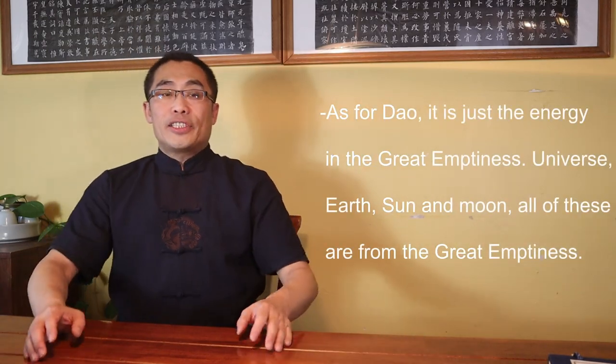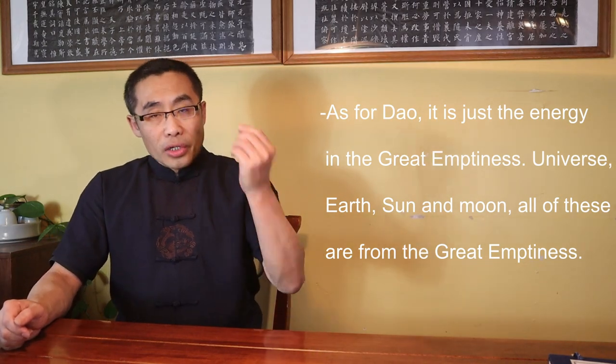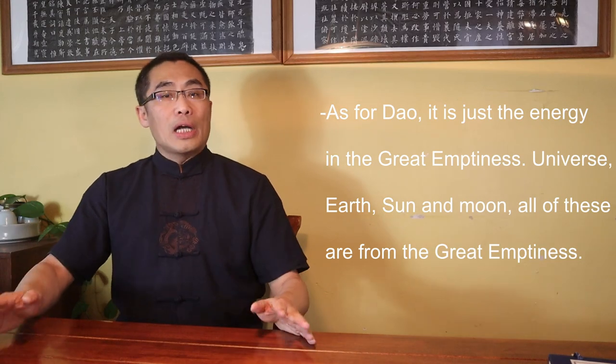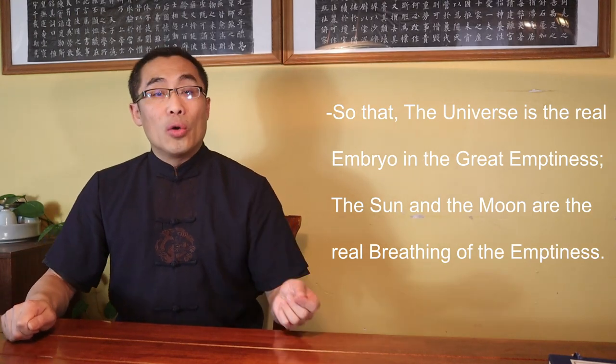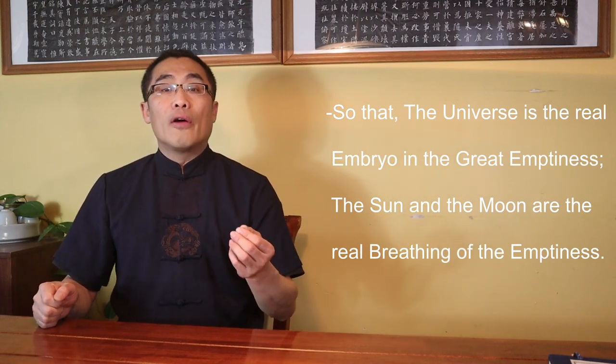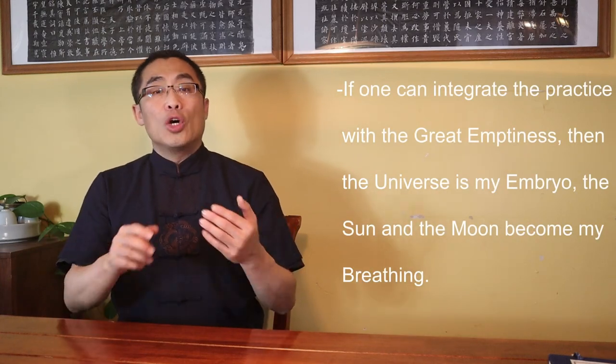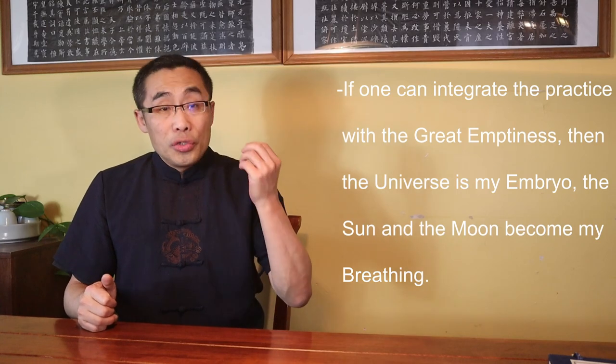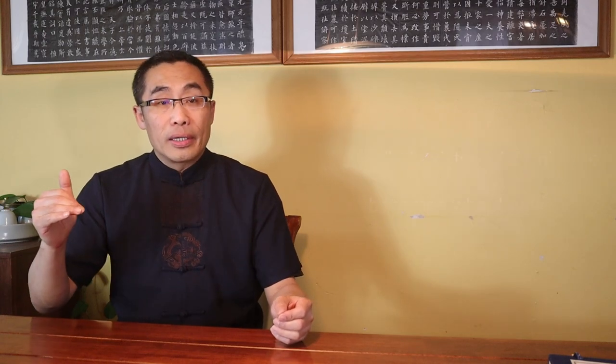伏道太虚而已,天地日月皆从太虚中来,故天地者太虚之真胎也,日月者太虚之真心也,人能与太虚同体,则天地既我之胎,日月至我之息,太虚之包罗,既我之包罗. As for Dao, it is just the energy in the Great Emptiness. Universe, Earth, Sun and Moon, all of those are from the Great Emptiness. So that the universe is the real embryo in the Great Emptiness, the Sun and the Moon are the real breathing of the Emptiness. If one can integrate the practice with the Great Emptiness, then the universe is my embryo, the Sun and the Moon become my breathing. What exists in the universe becomes what I have. End translation.